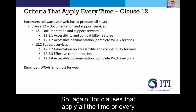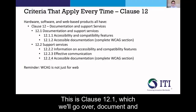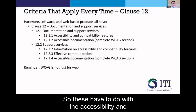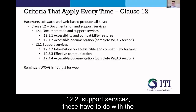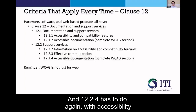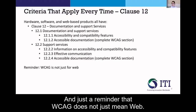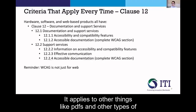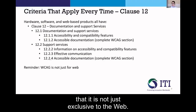Clause 12 applies all the time and has to do with documentation and support services. Clause 12.1 covers documentation and support services, including accessibility and compatibility features. 12.1.2 is completed within the WCAG section of the ACR. 12.2 support services cover information and compatibility features, and 12.2.4 covers accessibility documentation, also completed in the WCAG section of the ACR. Remember that WCAG does not just mean web — it applies to PDFs, other documentation, and software as well.